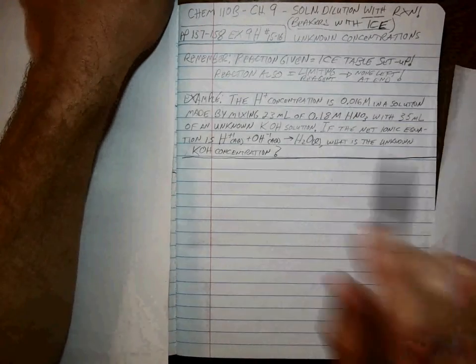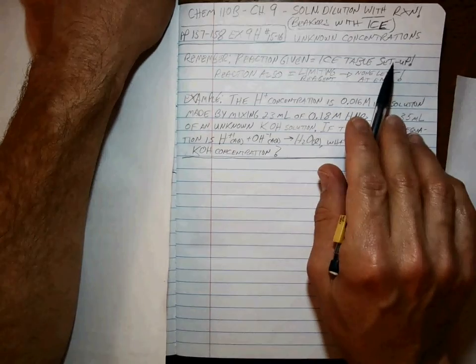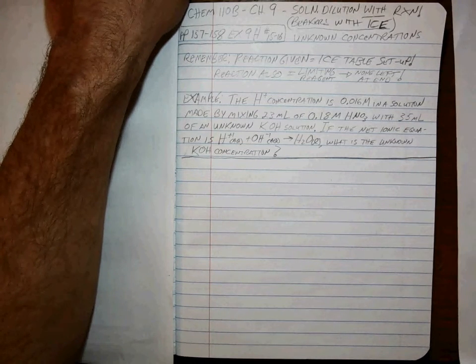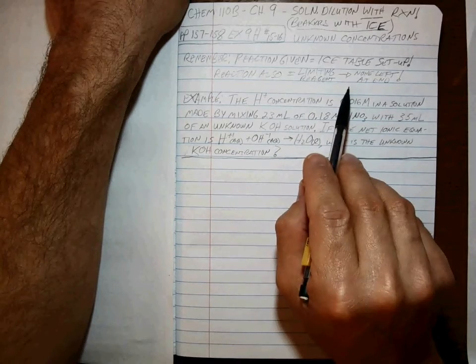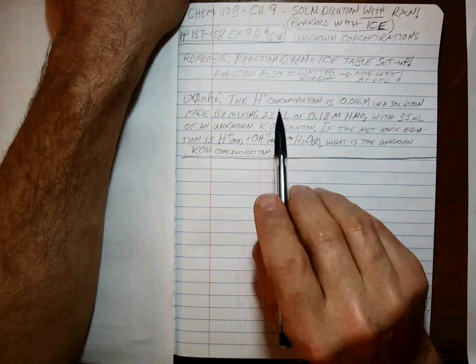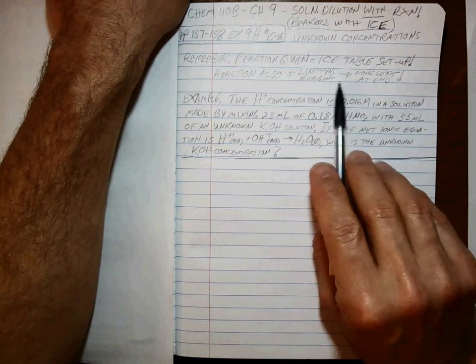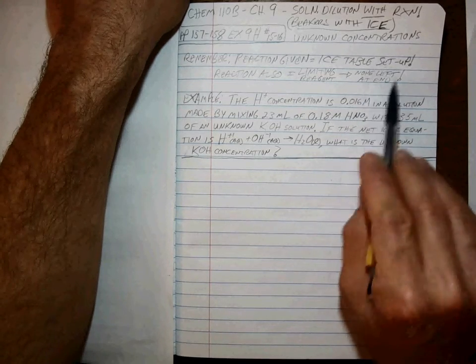These are reaction problems where they have an unknown concentration, and you have to work backwards to get the answer. The setup is the same, so you always have to remember that if a reaction is given, you are doing the ice table setup. If there's no reaction given, you are not doing the ice table setup. Also, remember that if you have a reaction A plus B goes to C, then either A or B has to have zero concentration at the end, for certain. There's going to be a limiting reagent because you use up either one or the other of the starting materials.